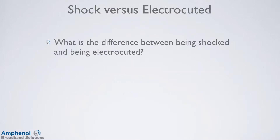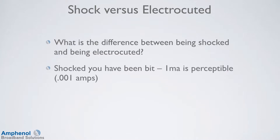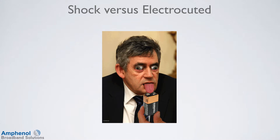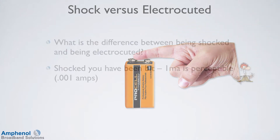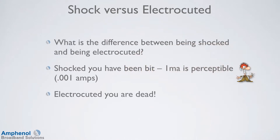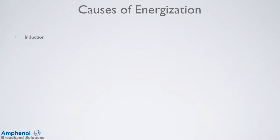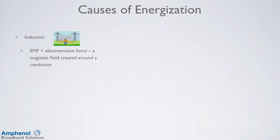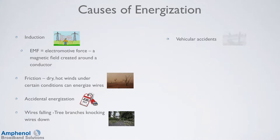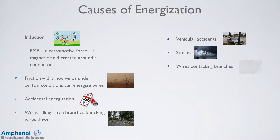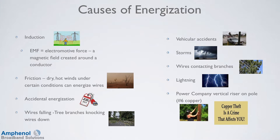Let's look at the difference between being shocked and being electrocuted. Shocked means you have been bit — one milliamp is perceptible, which is only one thousandth of an amp. How do you check 9-volt batteries? Using your tongue, which is very sensitive — putting a finger across does nothing, as the outer two layers of skin have no nerve endings. Electrocuted means you're dead. There are many things that can cause conductors to become energized: induction from close proximity to something, especially if parallel; you should maintain 12 inches from power secondaries when parallel in a home or on a pole. Also friction, accidental energization, down wires, car-pole accidents, storms, power lines contacting branches, lightning, and missing power company vertical risers on a pole.